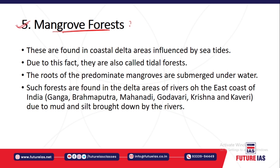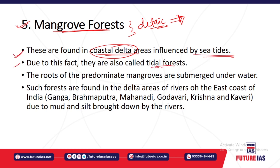Next are mangrove forests, which are found in deltaic regions. These trees are generally inundated under water — a certain portion is below water and a certain portion projects above. Their roots are inside the water, generally submerged, with adaptation features such as pneumatophores and probe roots through which they take oxygen and other gases from the air for sustenance.